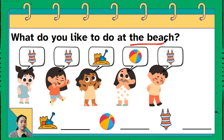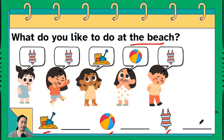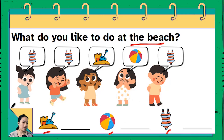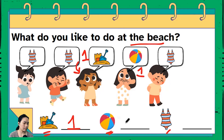Let's move on to the next part. What do you like to do at the beach? The three activities are: playing with sand or making a sand castle, playing with a beach ball, and swimming. Let's count. First, the sand castle — there's only one kid who would like to do the sand castle, so I'm putting the number one here. Next, beach ball — there's only one kid who would like to play with the beach ball at the beach, another number one.